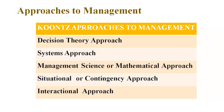Next is the management science or mathematical approach. It says that any problem arising in management can be put into a mathematical equation. As organizations grow larger and more complex, you need computer applications to make decisions. Management science or mathematical approach says that problems can be categorized and formulated into mathematical equations, and you can use different computer software or applications to take successful decisions.